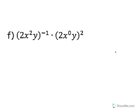Problem F: everything in parentheses is raised to the negative one power — the two goes to the negative one, the x squared goes to the negative one, the y goes to the negative one. So I get: two to the negative one, x squared times negative one which is x to the negative two, and y to the negative one.